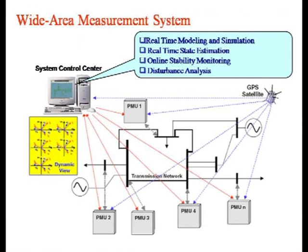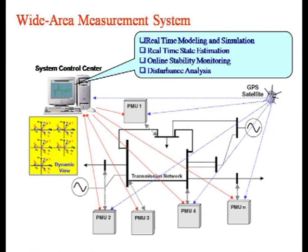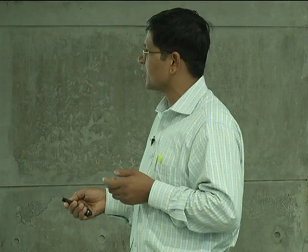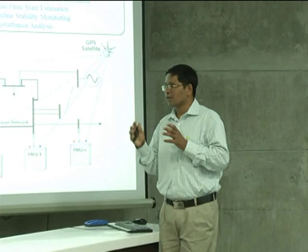We have an interconnected network — more or less like a ring network — with generators, bus bars, and some important lines. At some of the important bus bars we have the use of PMUs. These PMUs send information to a centralized control center, which will receive the phasor signals from all the bus bars. The PMUs send signals that are time-synchronized via GPS satellite to the center. With information from important bus bars available at the control center, we can have a sufficient level of monitoring in the interconnected systems and then apply the control strategy.